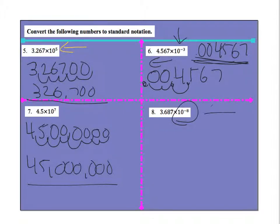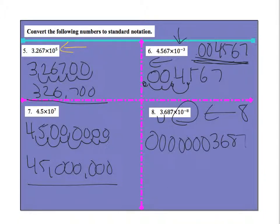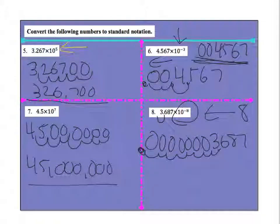Here, negative 8 means I'm going that way 8 places. So what I end up doing is adding 7 zeros because I move this over 1, and then I go 1, 2, 3, 4, 5, 6, 7. That's going to be what that looks like.